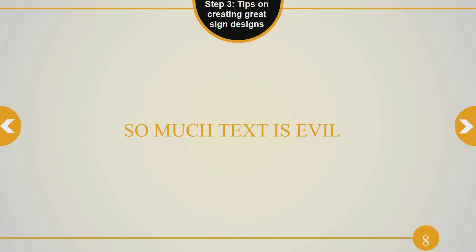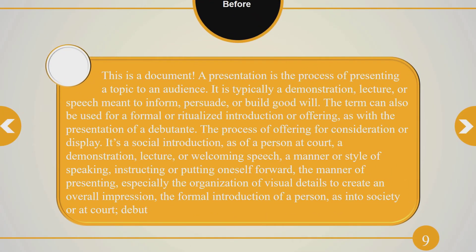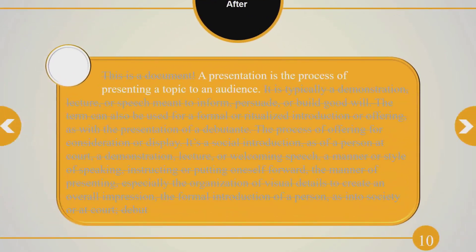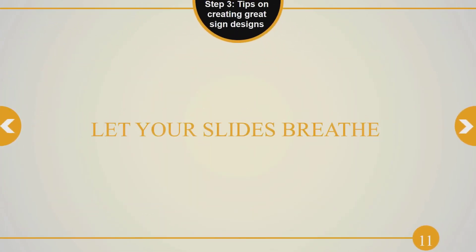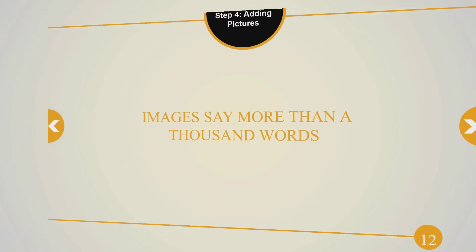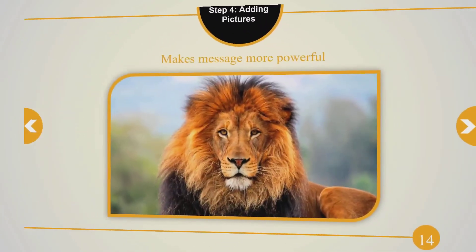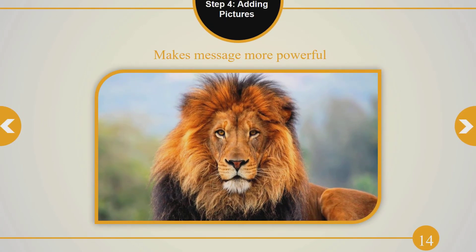Step three: tips on creating great sign designs. First, don't put too much text on the page — text is kind of evil in digital signage. If you look at a slide with a lot of text, nobody is really going to read through it as it flashes on the screen. Narrow it down to one single point you need to get across. Let your slides breathe — have space around them, don't fill them up too much. Images have a huge impact; they draw people's attention and make your messages more powerful.